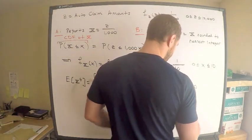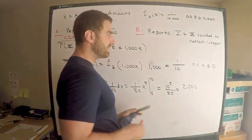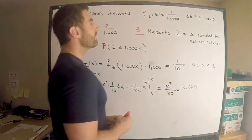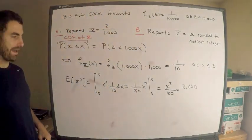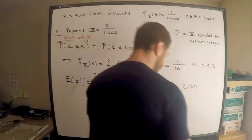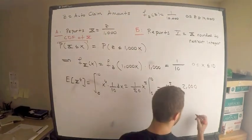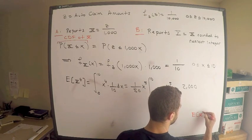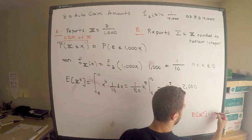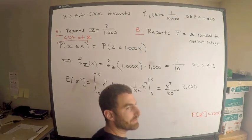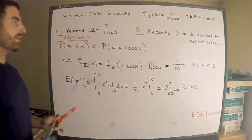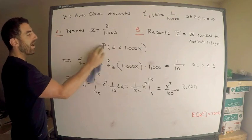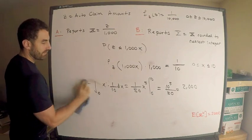Let me record that information in the bottom corner: the fourth moment of X equals 2,000. We've answered half of the question. Now I need to find the fourth moment of Y.